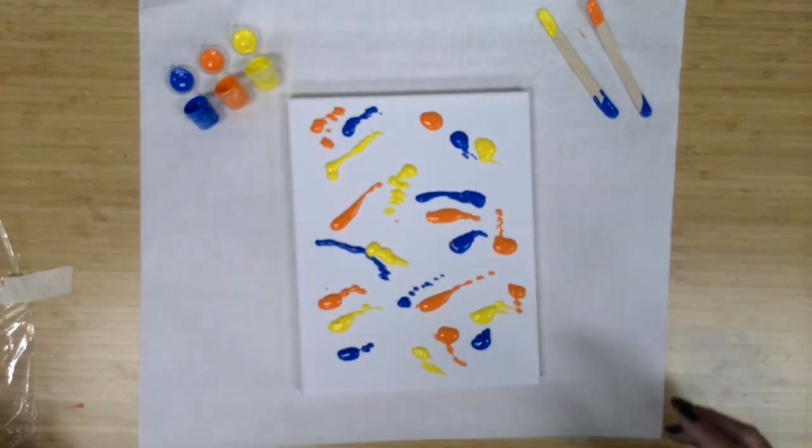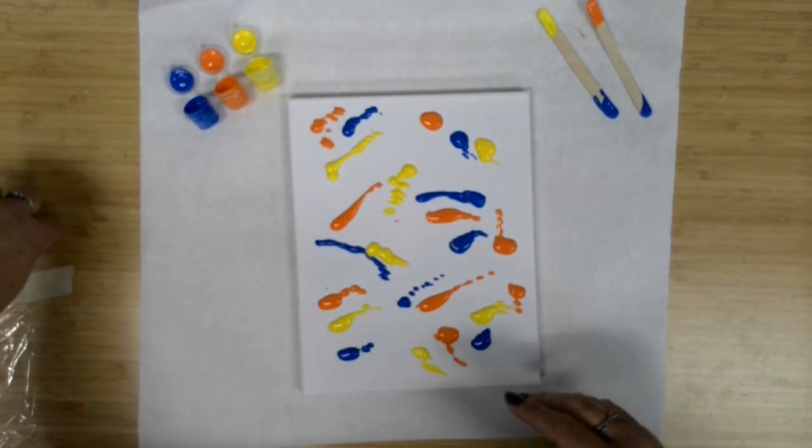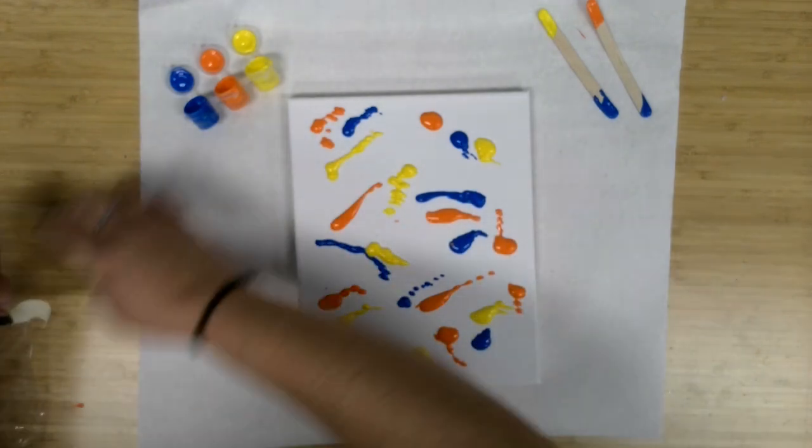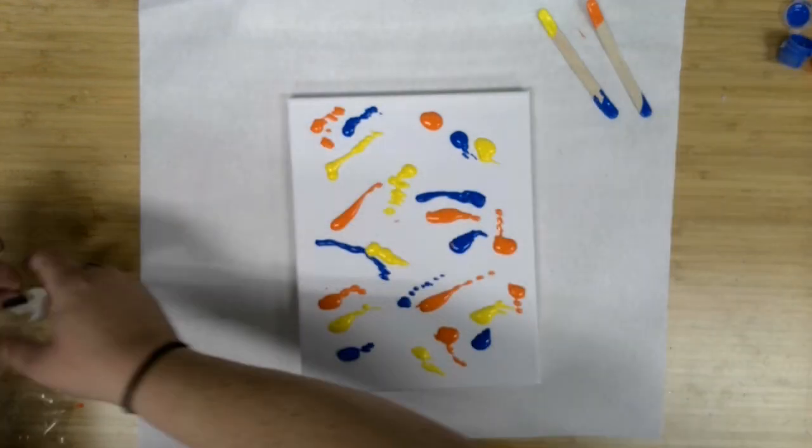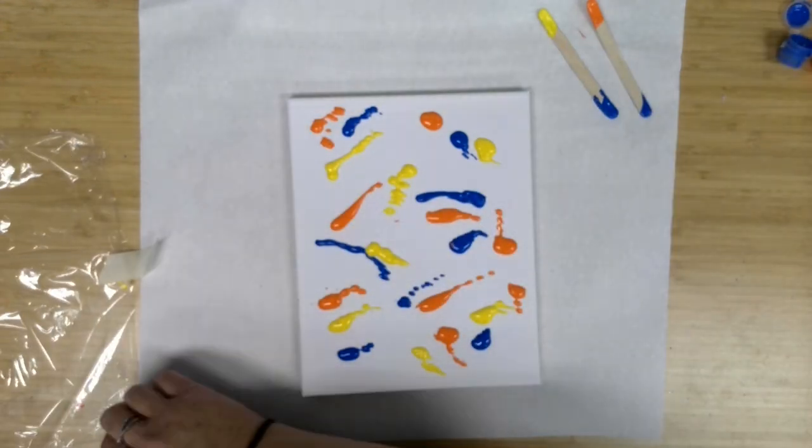So I've got my paint down on canvas. You can see I've just kind of gone for any type of design here. Set my paint out to the side. Now I'm going to get my cling wrap back out.